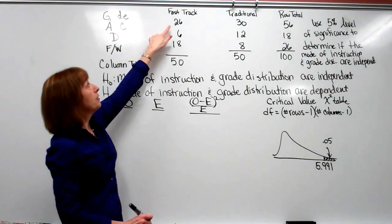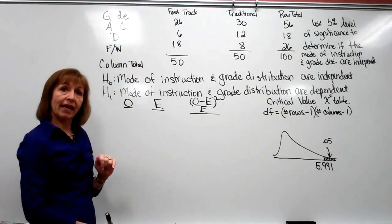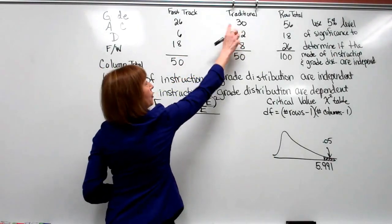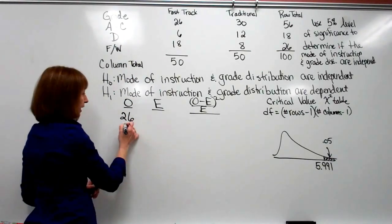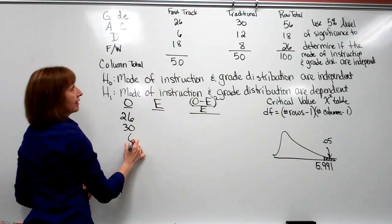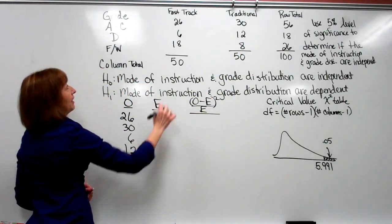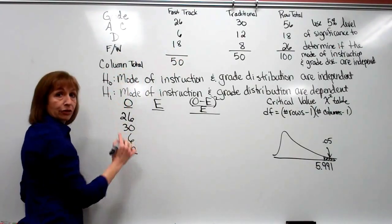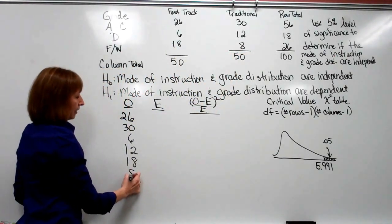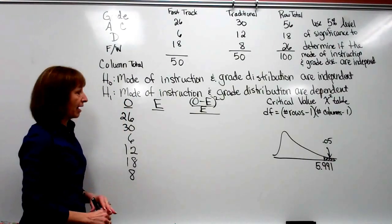The observed values are easy to get — we just look at what was observed in the contingency table. For students randomly selected from fast track with a grade of A to C, there were 26. For traditional with a grade of A to C, we have 30. Fast track with a grade of D is 6. Traditional with a grade of D is 12. Fast track with grade F or W is 18, and traditional grade of F or W is 8.